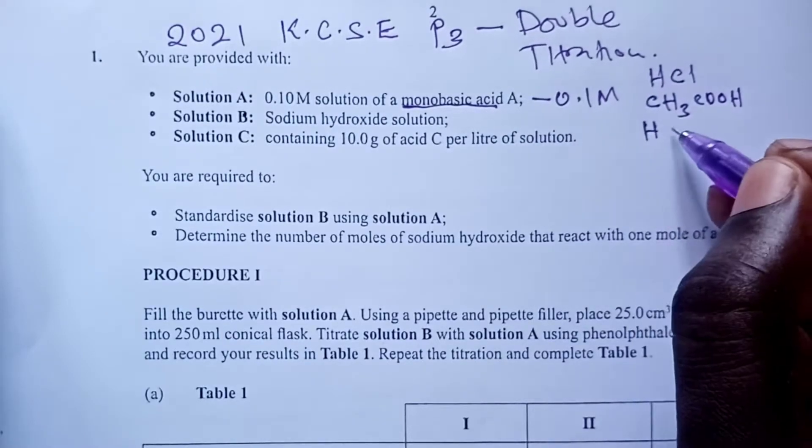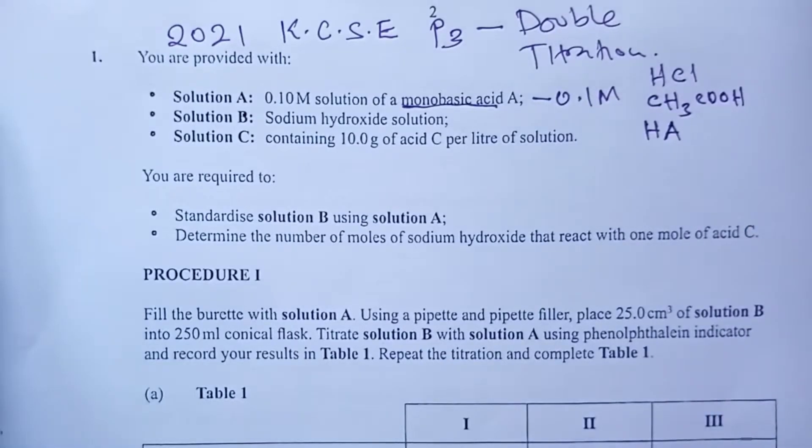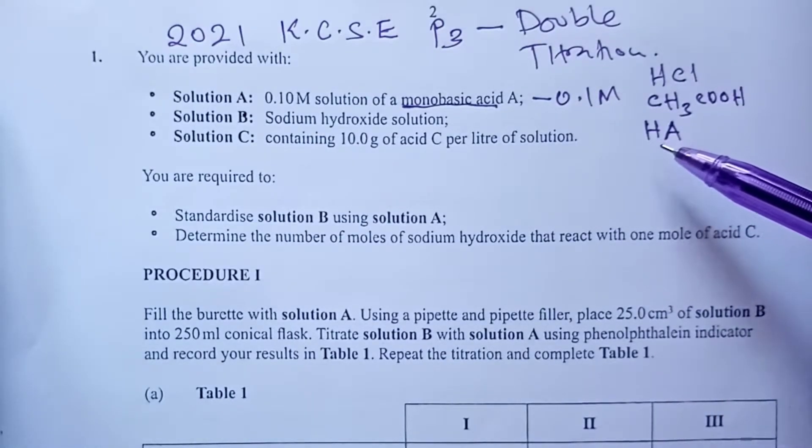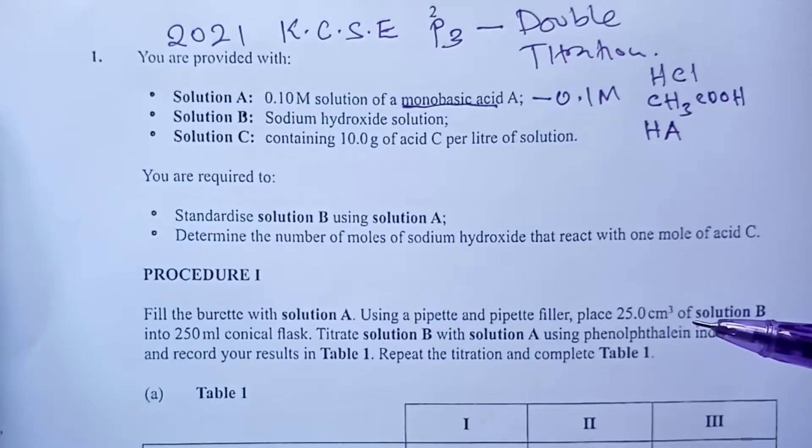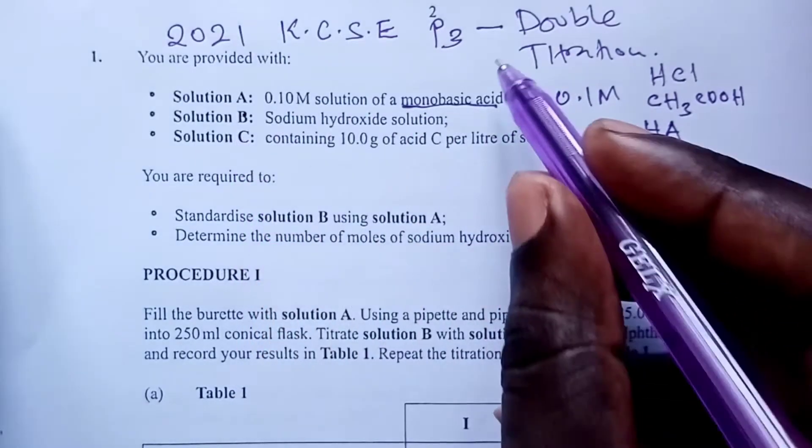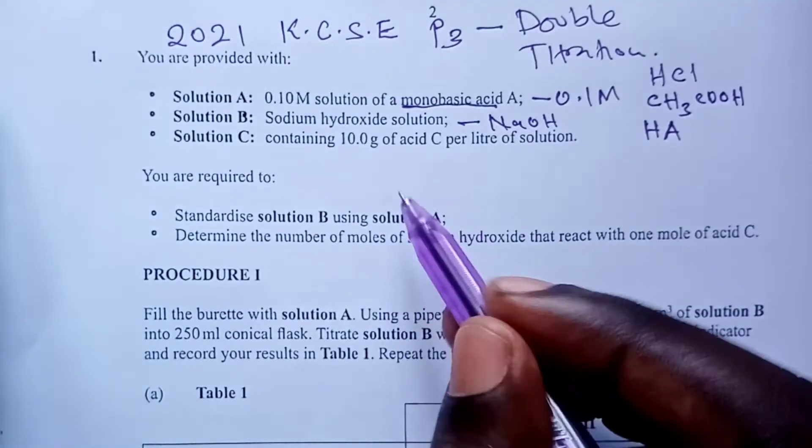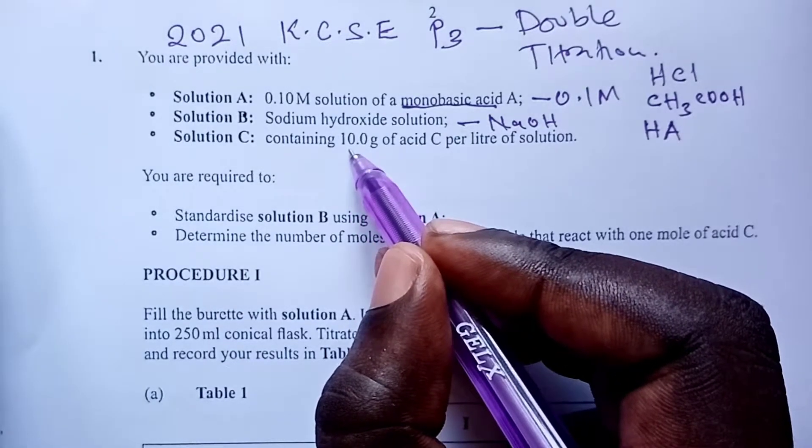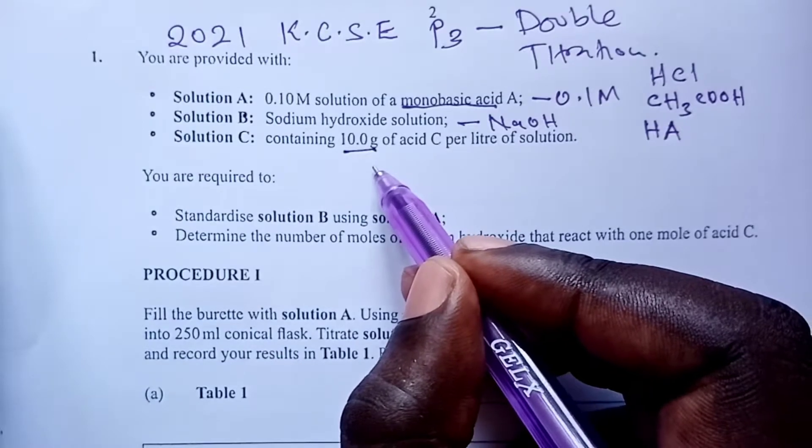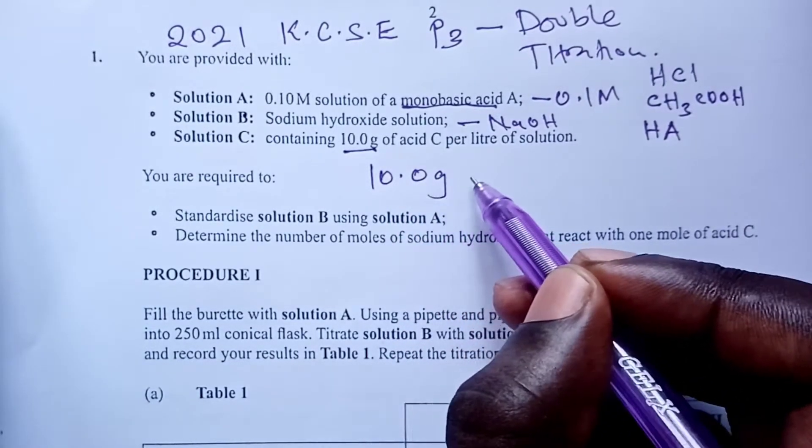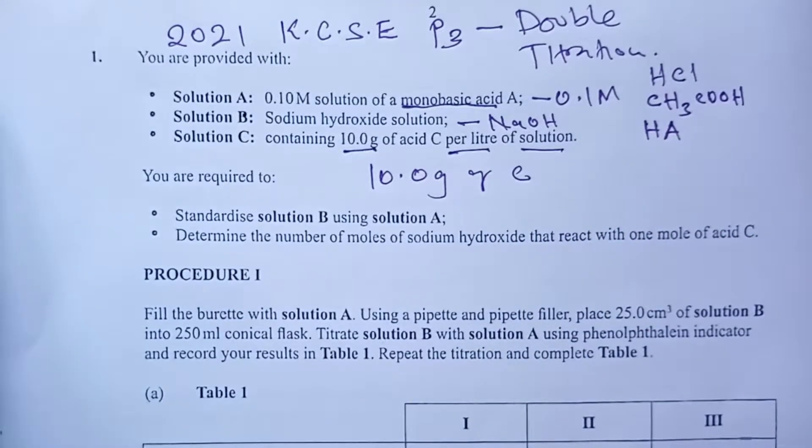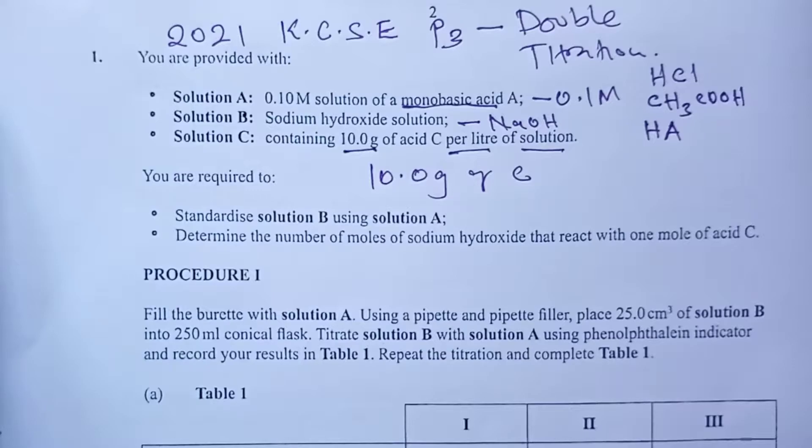Now, solution B is sodium hydroxide solution and solution C, we are told, contains 10 grams of an acid C per liter of solution. So we have done an analysis of the solution given.